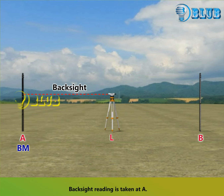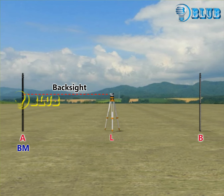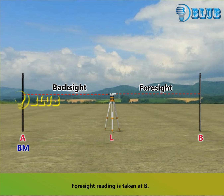Back sight reading is taken at A. Foresight reading is taken at B.